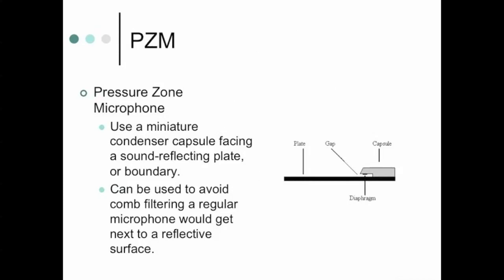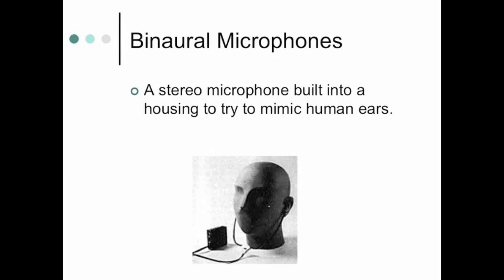Pressure Zone Microphone — the PZM — uses a sub-miniature condenser capsule facing down toward a reflecting plate. You're trying to capture sound hitting that surface, which moves the microphone and creates the sound. It's the kind of microphone you'd use on an acoustic guitar. It uses a secondary boundary as a reflecting plate. I actually used two of these inside a piano in live situations because they sounded good and rejected sound better from other instruments.